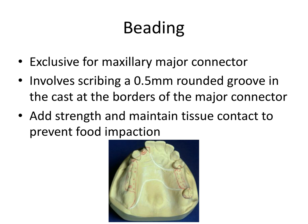Then we have the concept of beading, which is exclusive to maxillary major connectors. It involves scribing a roughly 0.5mm rounded groove in the cast at the borders of the major connector. You can see where those bead lines are here, referencing the border of the major connector. When the framework is fabricated on the master cast, the metal flows into these little bead lines and is a little bit thicker at the borders than in the center — which is exactly what we want for added strength and firmer tissue contact, so that food is less likely to get trapped underneath the framework.